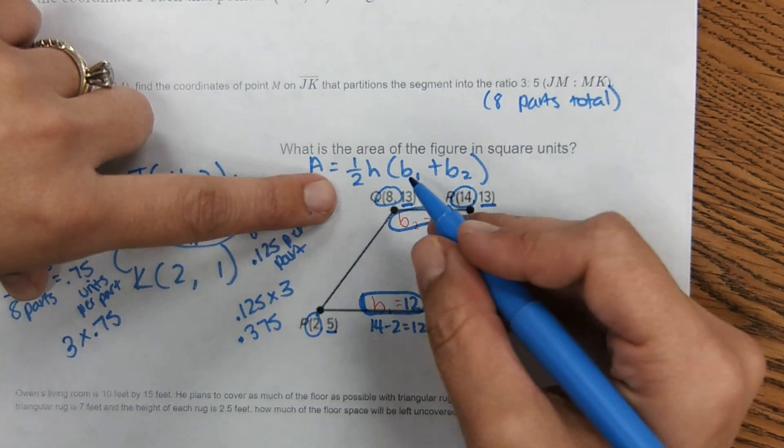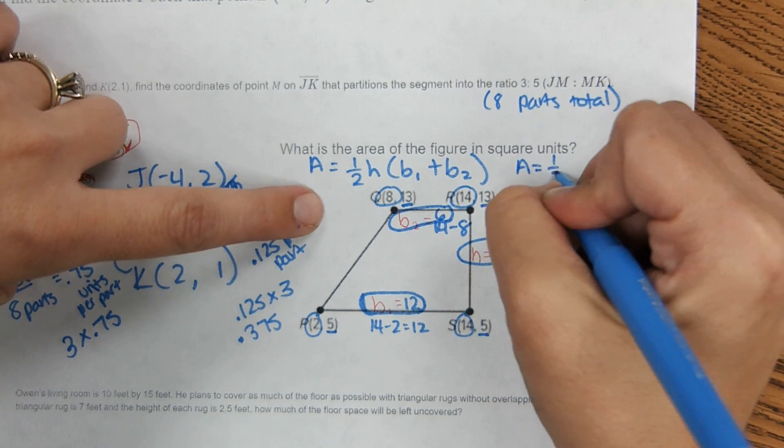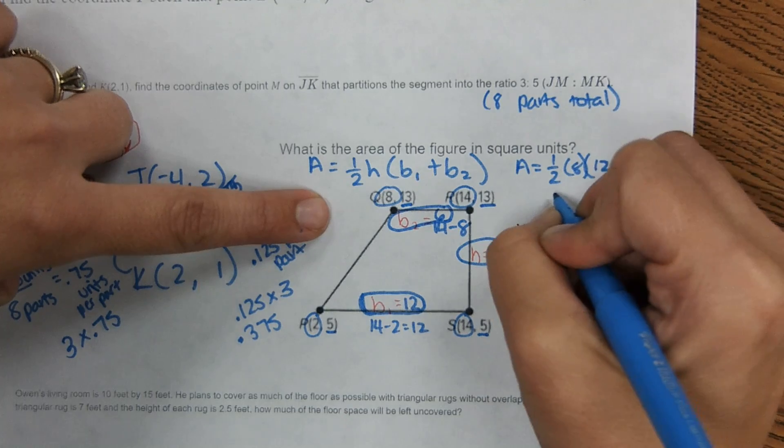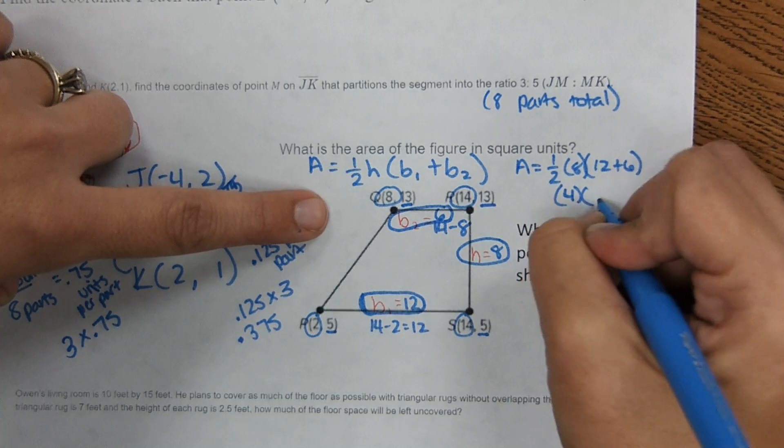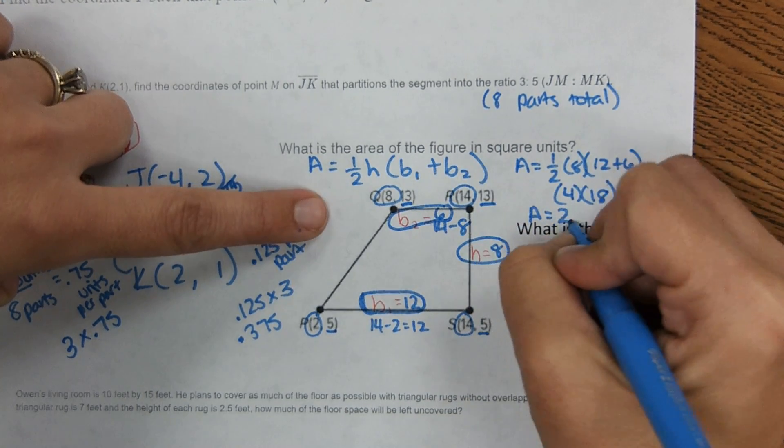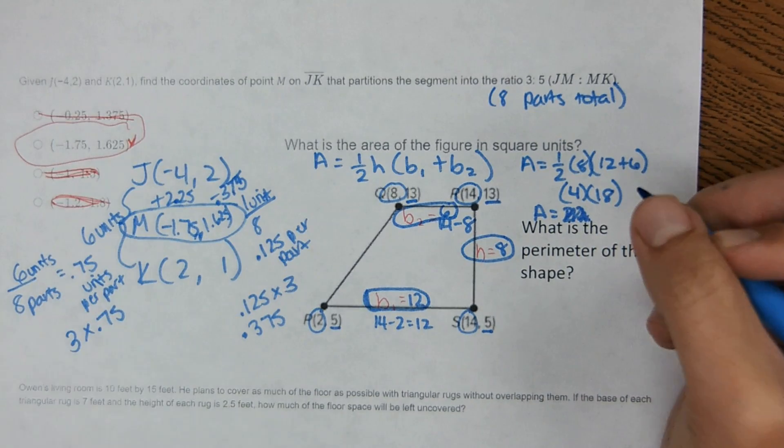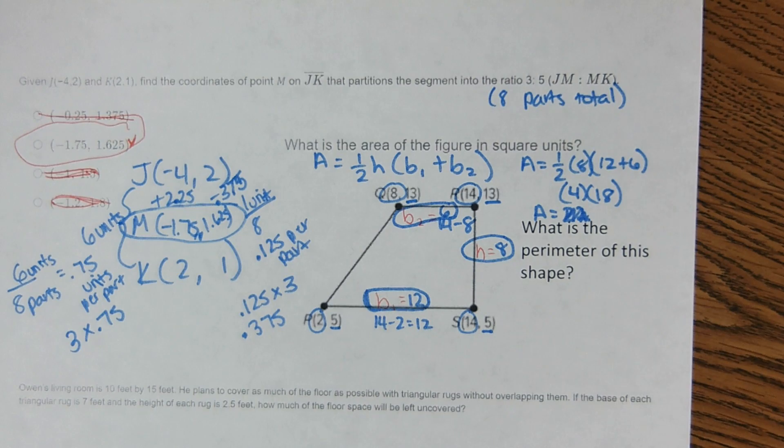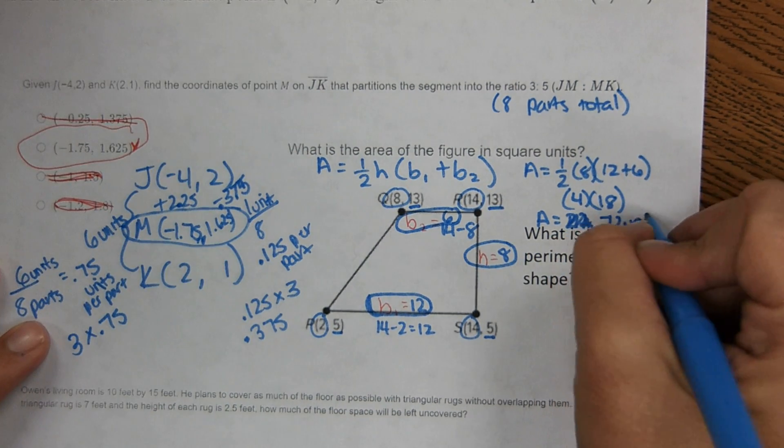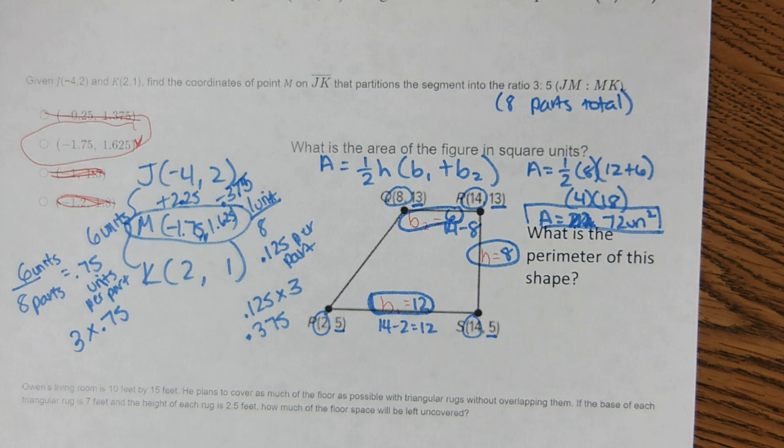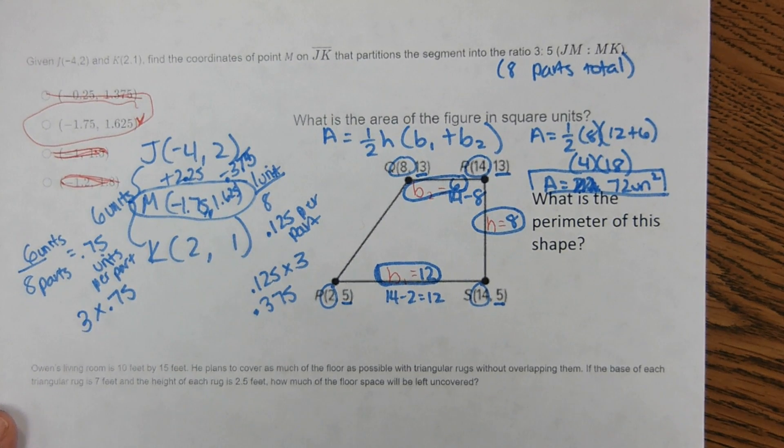Okay, now that we have all these numbers for the equation for area, we're going to plug it in. 4 times 18 is 72 units squared.